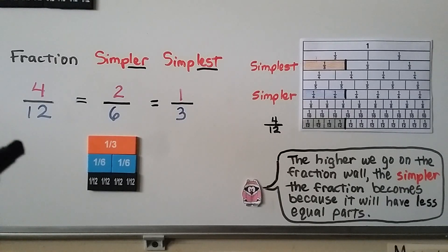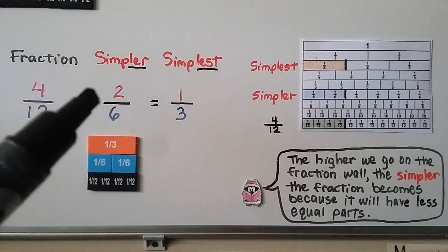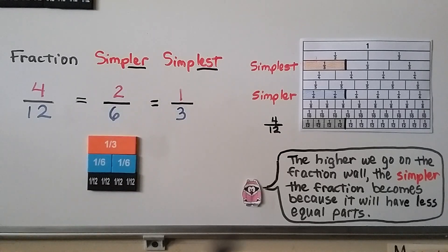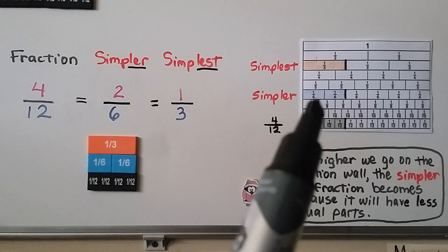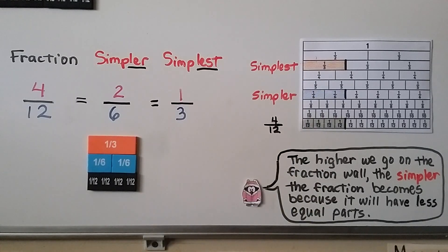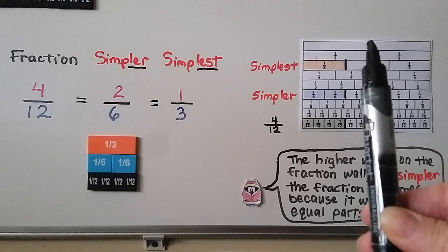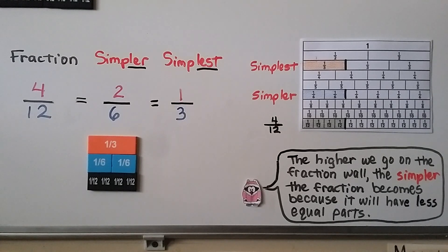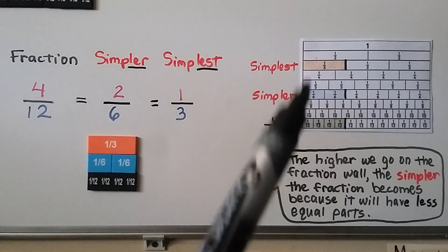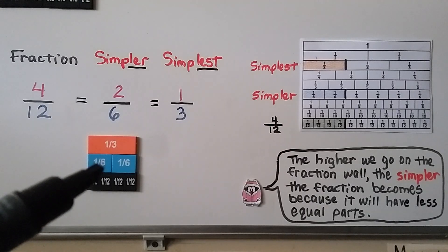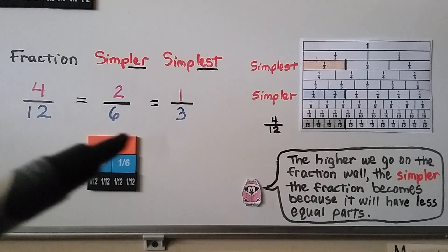Here we have four-twelfths. We can write it in a simpler form as two-sixths, but in its simplest form it would be one-third. On our fraction wall, four-twelfths, two-sixths, and one-third all line up to the same length, so they're equivalent. One-third only has one part, so it's in its simplest form.